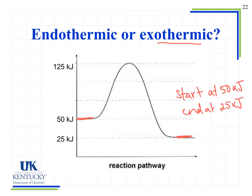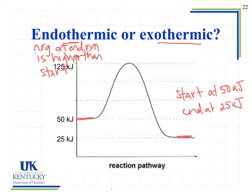When we look at something that is endothermic, energy is going into the system, and what we would see is that the energy at the end of the reaction is higher than at the start of the reaction. Notice we're only looking at two points — comparing this initial point and this end point — not looking at the region in the middle, which we'll talk about in just a second. So endothermic: energy at the end is higher than energy at the beginning, meaning energy is going into the system. Exothermic: energy is higher at the beginning and lower at the end, because it is exiting the system.